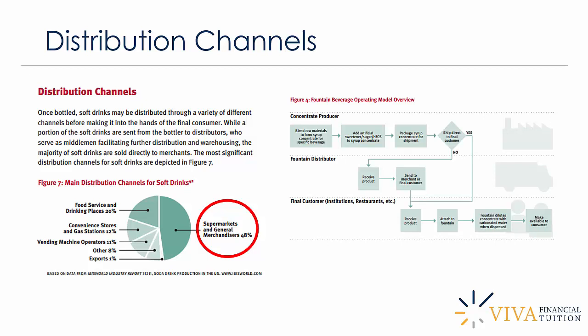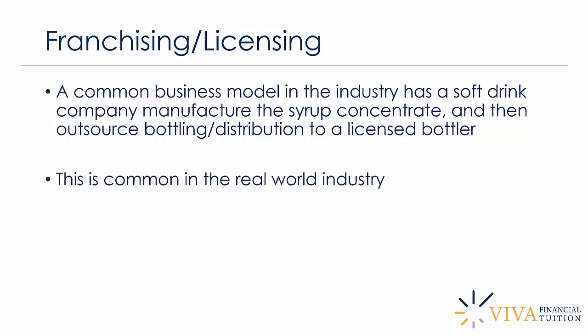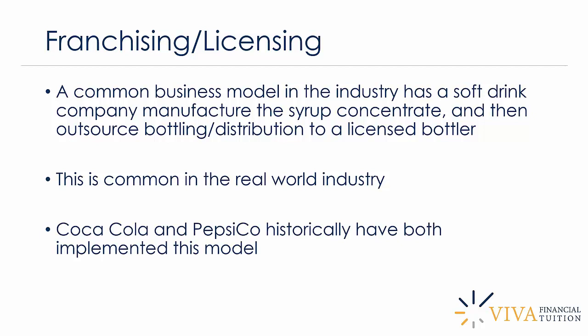Looking at the beverage operating model overview, you have the concentrate producer, then a fountain distributor and the final customer. It's worth taking time to understand that process flow and its logic. On the issue of franchising and licensing, which is really crucial in this industry: a common business model has a soft drink company manufacture the syrup concentrate and then outsource the bottling and distribution to a licensed bottler. This is actually very common in the real-world industry — really the norm — and is a reflection of how PepsiCo and Coca-Cola have such major global influence in syrup concentrate production, effectively imposing this model with the separation of bottlers and syrup concentrate producers.